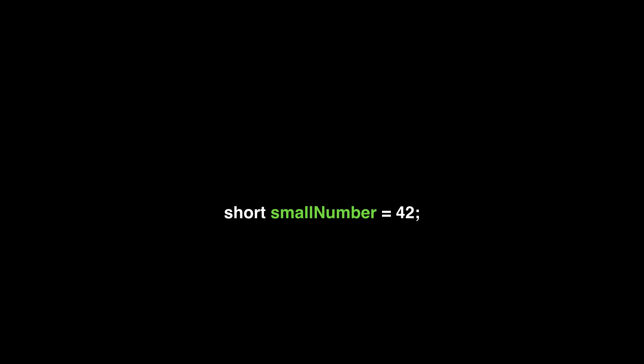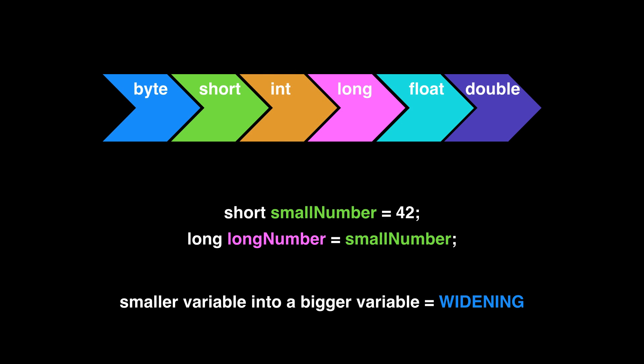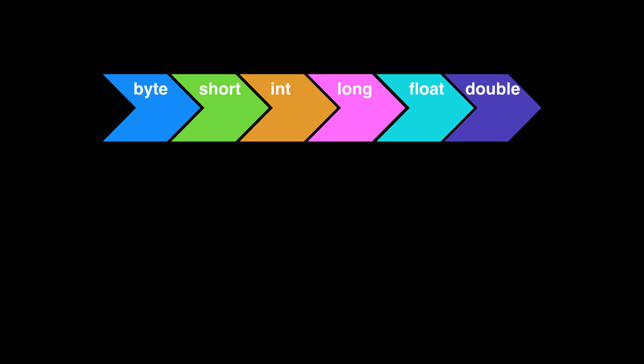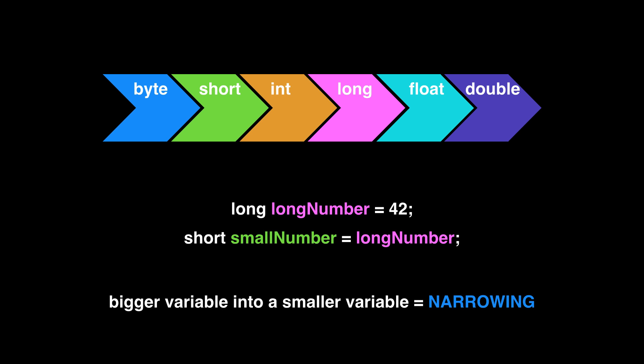There are cases where you want to change the type. For example, you have a short but you're trying to use it somewhere that expects a long. You can tell Java to pretend this integer is a long using something called casting. When you go from a smaller type to a bigger type, you're making a widening conversion. This always works for the number types — if you start with a type somewhere in these arrows and move the type to the right, Java is going to do it without complaint. The other direction is a different story. If you start with a long and try to put it into a short, Java is going to give you a compile error — the lossy conversion error. Going from bigger to smaller is called a narrowing conversion.